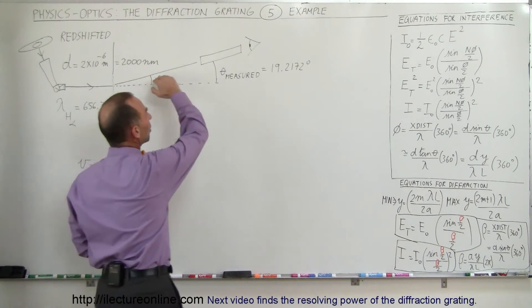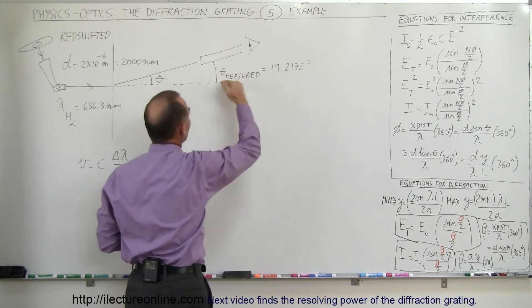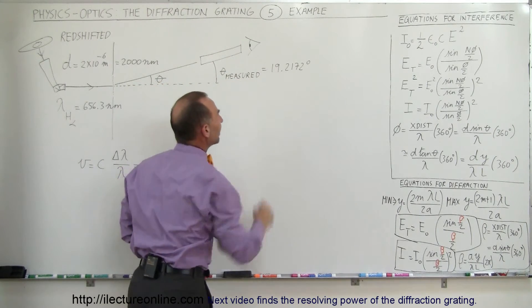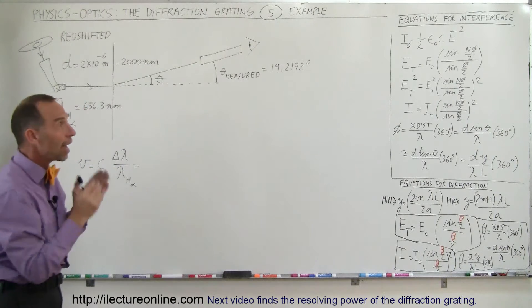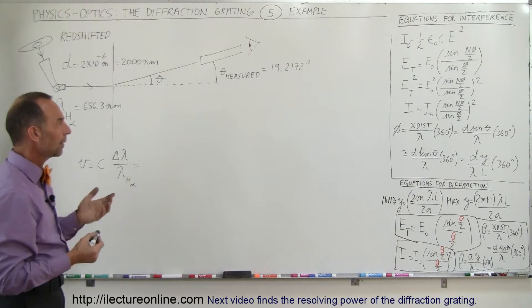So we send that through what we call a collimator, and then we collect the light and we measure that exact angle compared to the central maximum. And if that's the angle, we should be able to figure out how much the wavelength has shifted from its normal 656.3 nanometers.